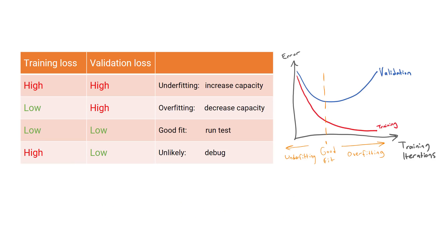To recap, here's a cheat sheet to interpret the error or loss in general on the training and validation sets. If the loss is high both on the training and validation sets,